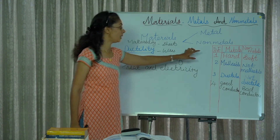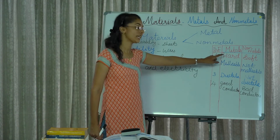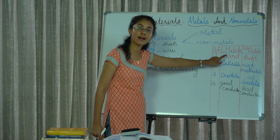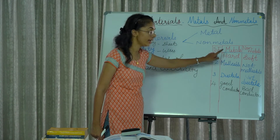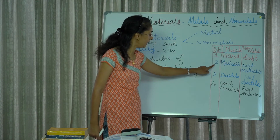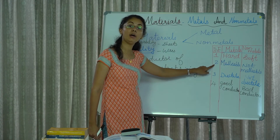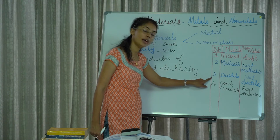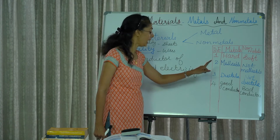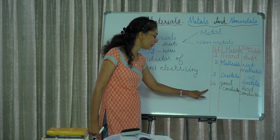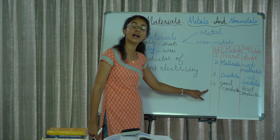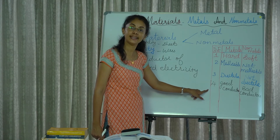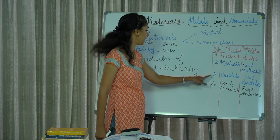The physical properties of metals: first, metals are hard; second, metals are malleable; third, metals are ductile; and fourth, metals are good conductors of heat and electricity.